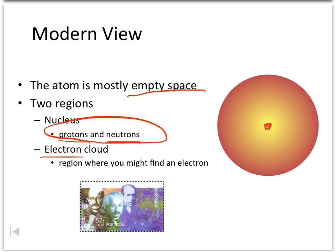On the outside region, it's called the electron cloud. This electron cloud is where the electrons are, and the electrons are moving around.